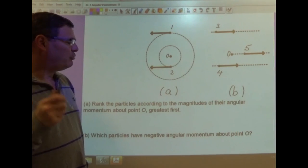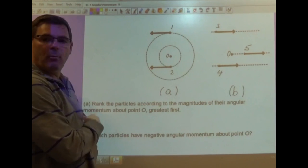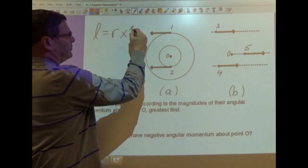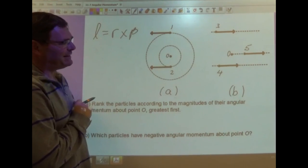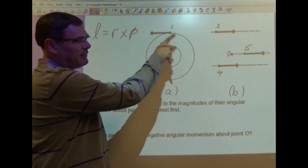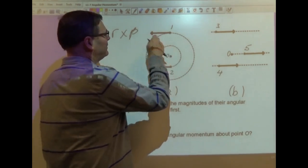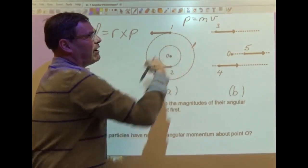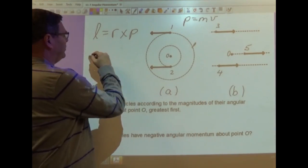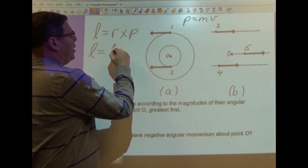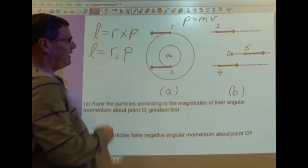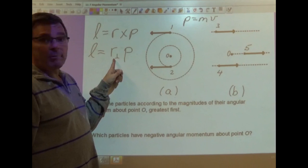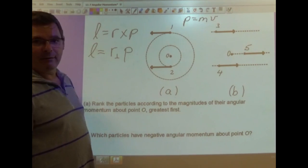The problem first asks us to rank them according to their angular momentum. So our equation for angular momentum is L equals R cross P. Which, for this example, if we notice that the momentum is the same for all the particles, they all have the same mass and they all have the same velocity, so they all have the same P. So if I rewrite this equation to say R perpendicular times P, since P is the same for all of them, if I write them according to their R perpendiculars, I'll be able to write them by their angular momentum.